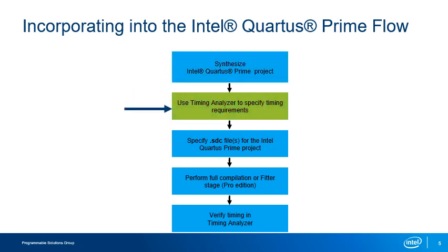Next, you will use the Timing Analyzer flow just presented to specify timing requirements for the design. As mentioned earlier, Timing Analyzer in the Intel Quartus Prime Pro Edition software does not support analysis with a post-synthesis netlist. If you are using this edition of the tool, you will start by adding your .sdc file or files to the Intel Quartus Prime project settings, which we will discuss in a moment.